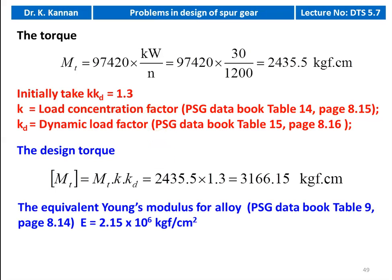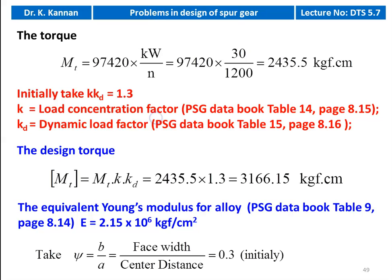We take the equivalent Young's modulus for alloy steel: E equal to 2.15×10^6 kilogram force per centimeter square. We take the B by A (psi) value as 0.3 for our calculation.